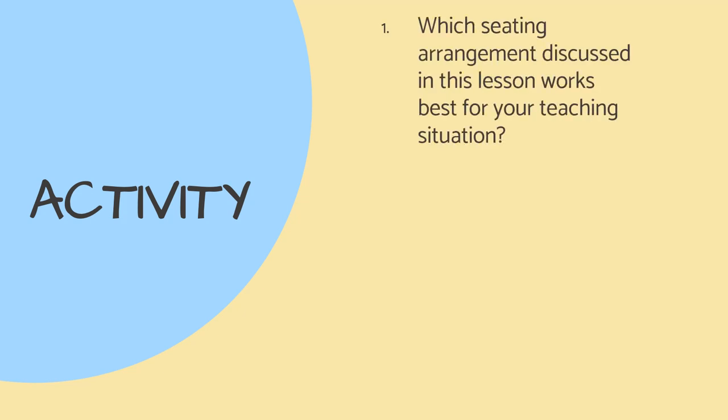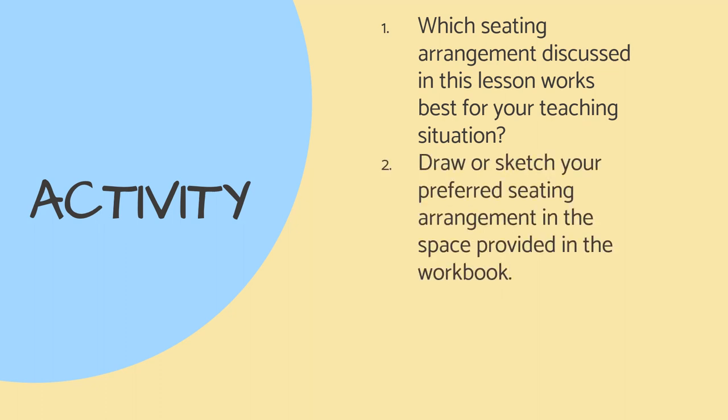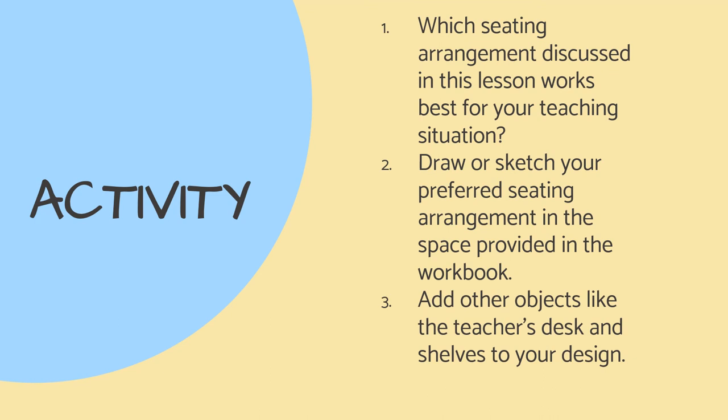We have reached the end of this lesson. Complete the following activity: 1. Which seating arrangement discussed in this lesson works best for your teaching situation? 2. Draw or sketch your preferred seating arrangement in the space provided in the workbook. 3. Add other objects like the teacher's desk and shelves to your design — use a pencil and basic shapes; you don't have to be an artist. You may need extra paper in case you need to start over. 4. If you don't feel like drawing, you can use the seating chart PowerPoint provided with this module to create a digital chart. Just download the PowerPoint, move the objects on the slide, and print it out when done. Good luck!